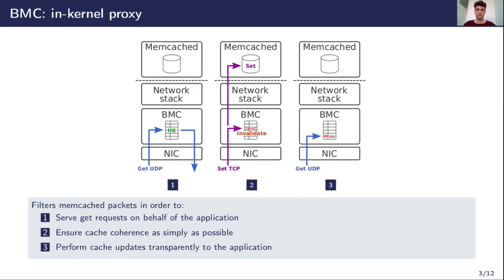When a get is received and the BMC cache access results in a cache miss, the request is forwarded to Memcached as usual. Then, in case of a cache hit in Memcached, the application's reply is intercepted by BMC to update its corresponding cache entry transparently.